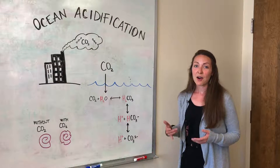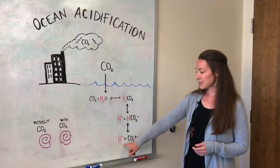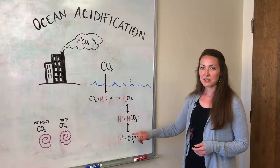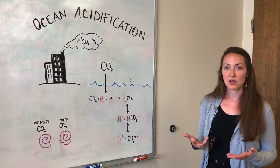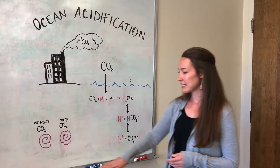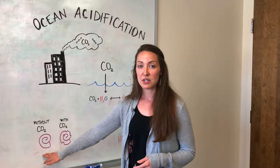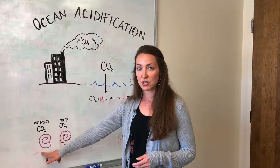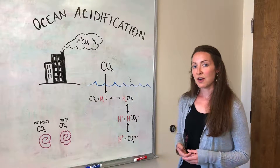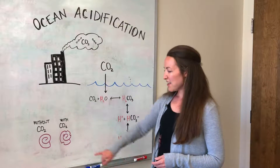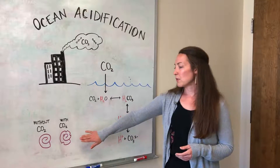Another thing happens: that same free hydrogen ion likes to bond with something called a carbonate ion. Carbonate ions are important because they're the building blocks for shells in the ocean. So if the free hydrogen ion is taking away these carbonate ions from shellfish that need them, it's actually weakening or dissolving shells. On the left we see ocean water without additional CO2 and a healthy, complete shell. On the right, ocean water acidified with CO2 shows a shell that is holey, weak, and dissolved.